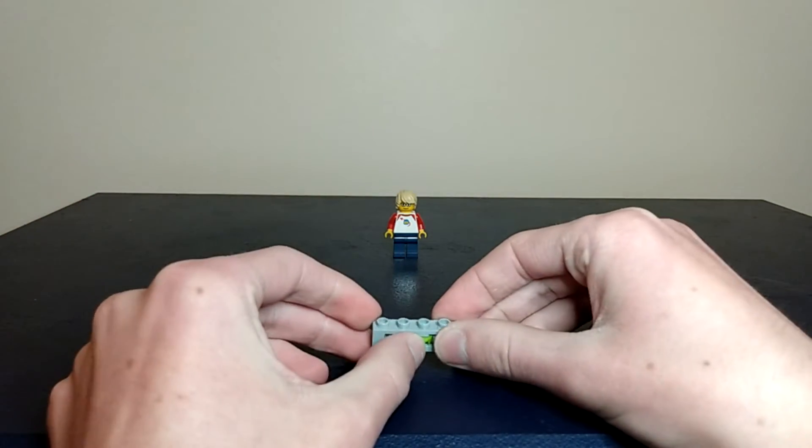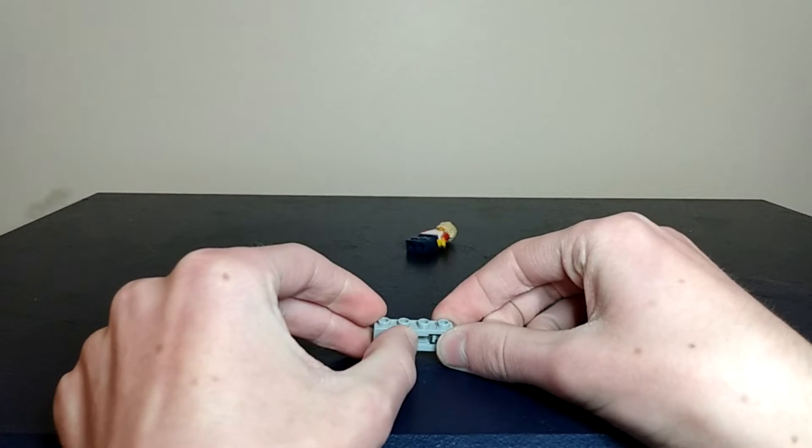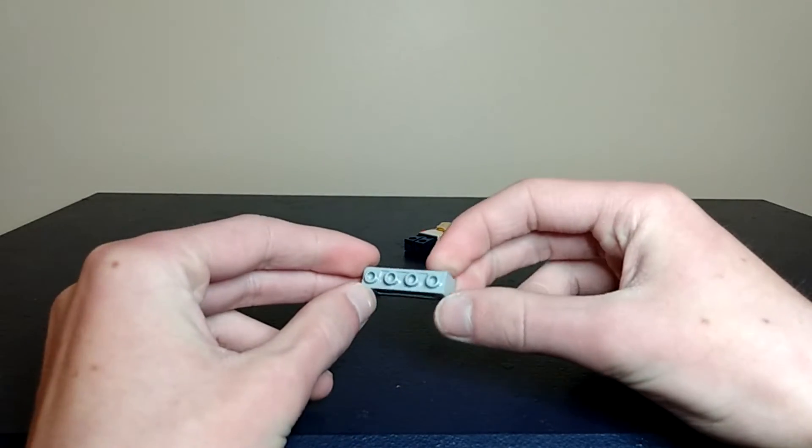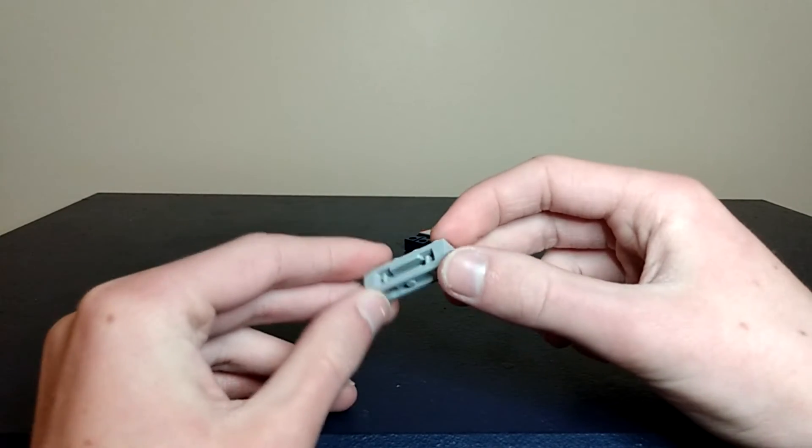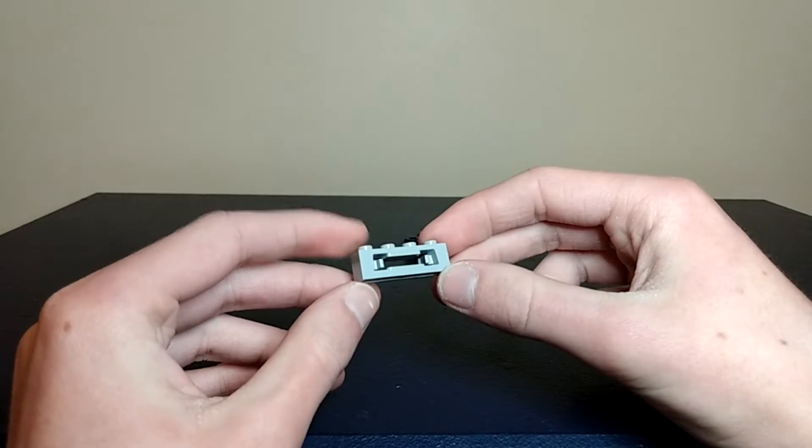Now we're starting to get into the cooler projectile launchers. This is like a disc. There we go. Look at that. And it's really easy. You don't lose your piece. Like I can see it on the floor right there. And it looks like a brick. So it's a win-win.